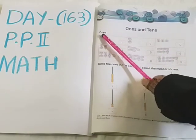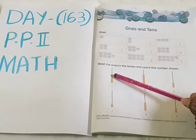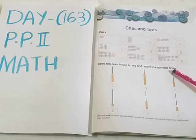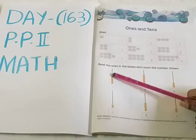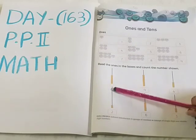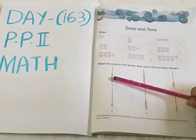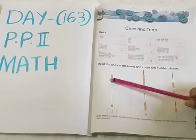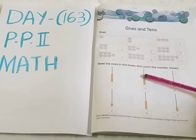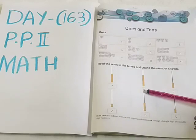Here also you can see. Read the Ones in the boxes and count the numbers shown. You have to first count these boxes and write the number here. There are 7 boxes, so you have to write number 7 here. There are 9 boxes, so you have to write number 9 here.